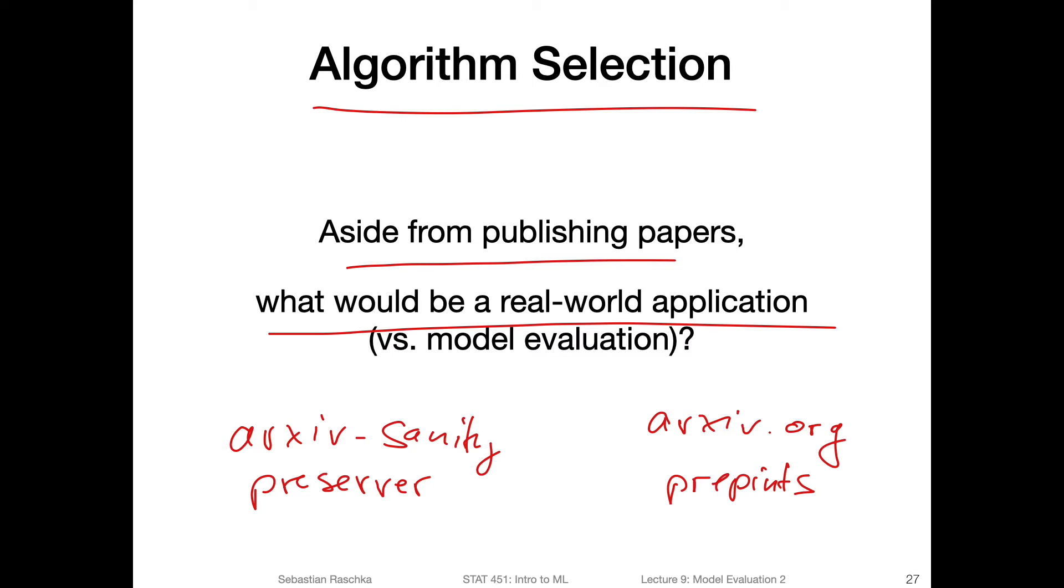On arXiv, we have a lot of preprints every day, like hundreds of machine learning papers. One of the moderators, they're helping, taking a look at whether the submissions look good. It's actually a very interesting thing to do because you see all the interesting titles every day uploaded. You get an idea what's currently trendy in machine learning or machine learning research. We usually have around 100 to 200 articles each day.